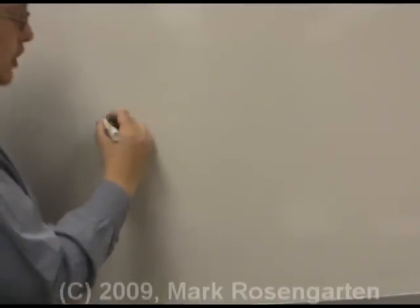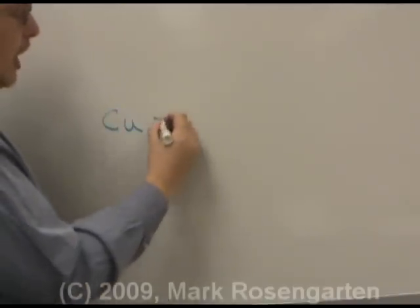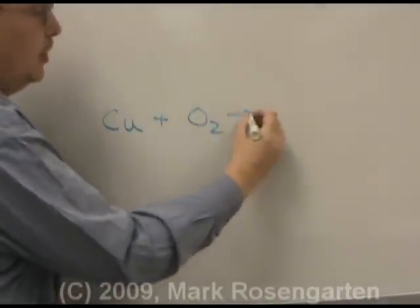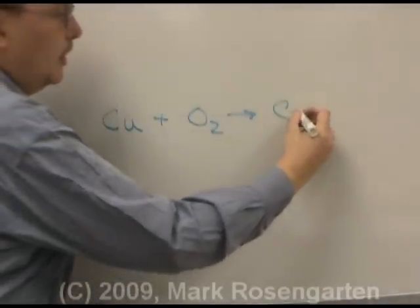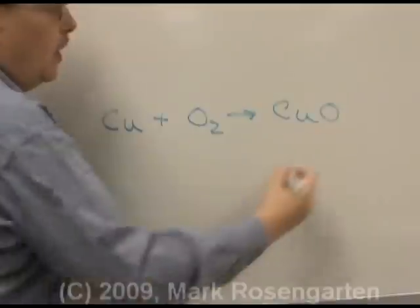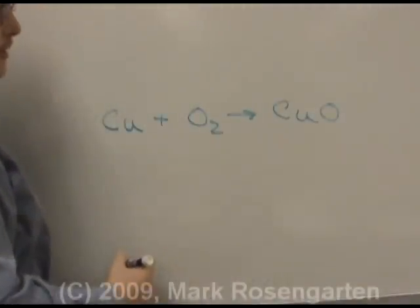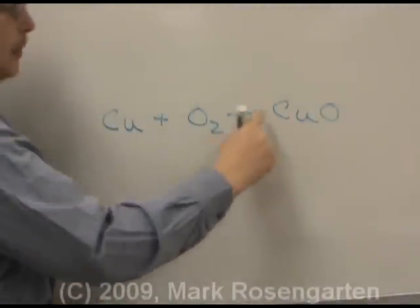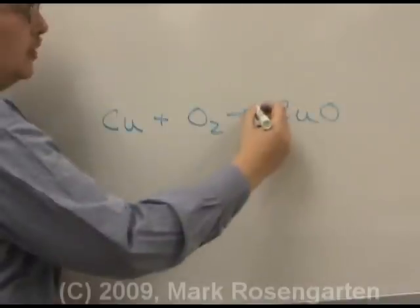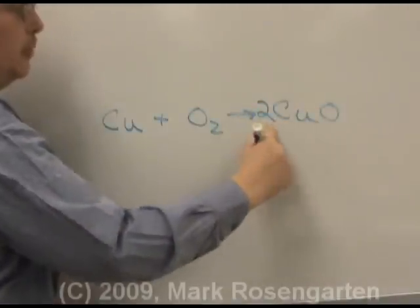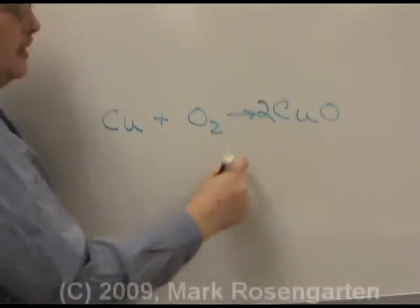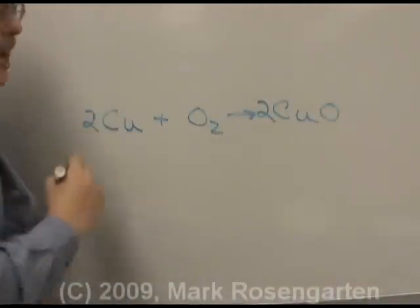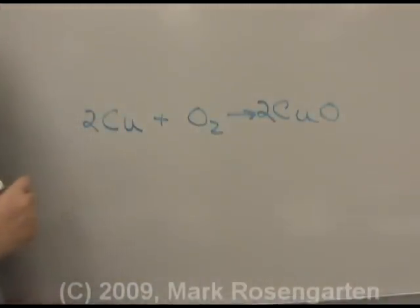For this synthesis reaction, copper reacted with oxygen to form copper oxide. Balancing: one copper, two oxygens on the left and one on the right — put a two in front to balance it, then fix the copper, and now it's balanced.